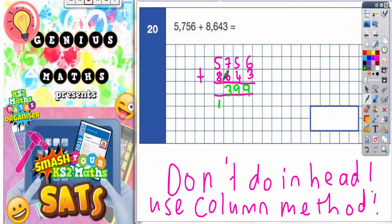5 add 8 is also 13. Plus that 1 I carried is 14. So your final answer should be 14,399. As long as you get it lined up in the right columns and take your time, it should be nice and easy.